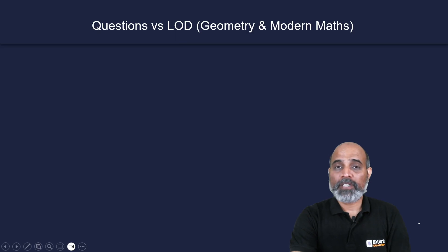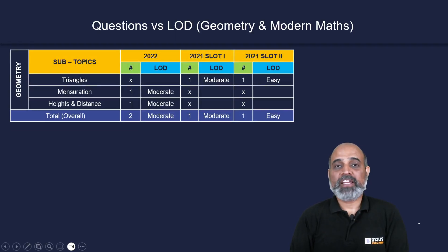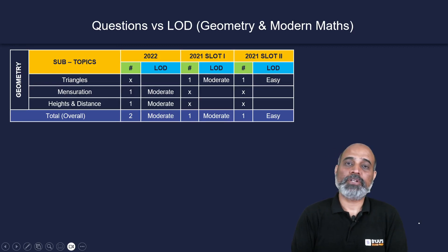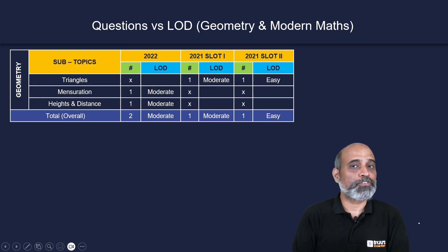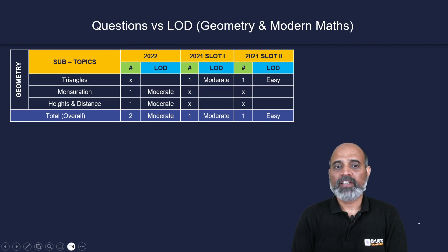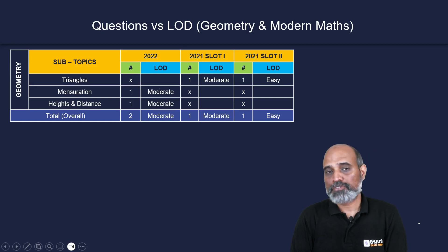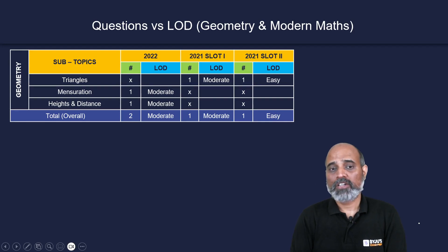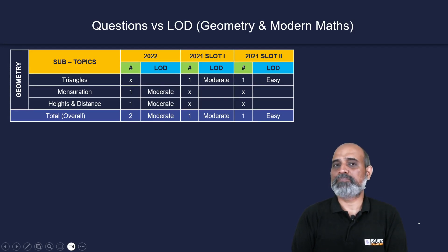For geometry, questions came from three types: triangles, mensuration, and heights and distances. In 2022, there were two questions — one from heights and distances and one from 3D mensuration — both moderate, making geometry overall moderate that year. In 2021 slot one and slot two, there was only one question each, both from triangles. Overall, across the last three papers, geometry ranged from easy to moderate.